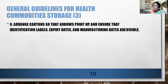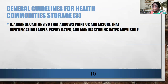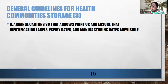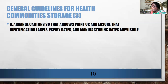Arrange cartons so that the arrows point up, and ensure identification labels, expiry dates, and manufacturing dates are all visible. Do not store reagents upside down or on their side — they can leak. By the time you want to carry out a test, you may find that an important reagent has leaked out and the whole kit is unusable.